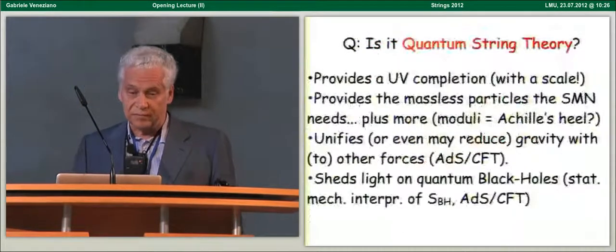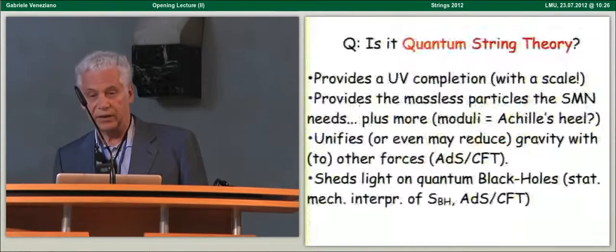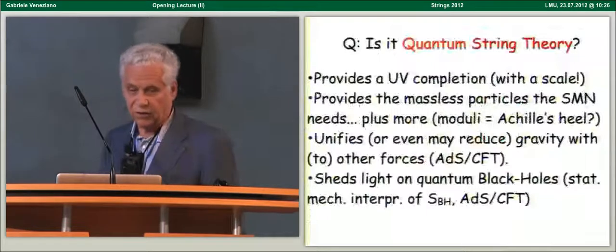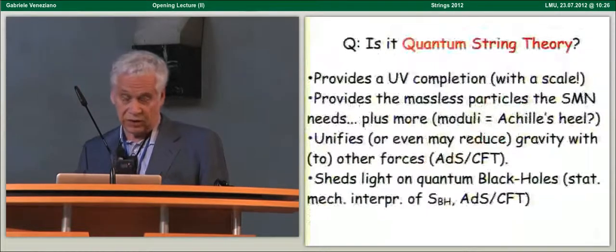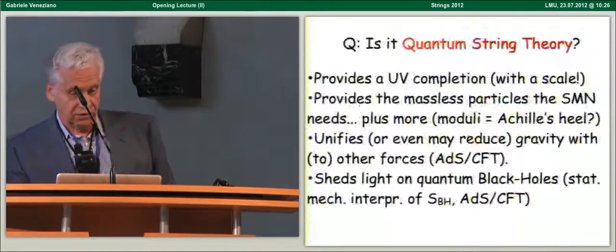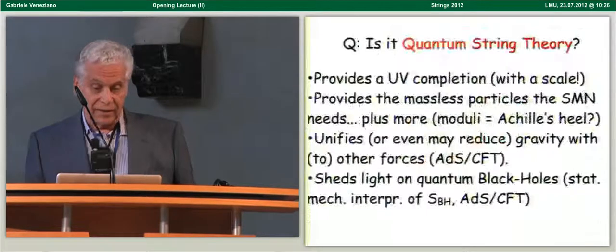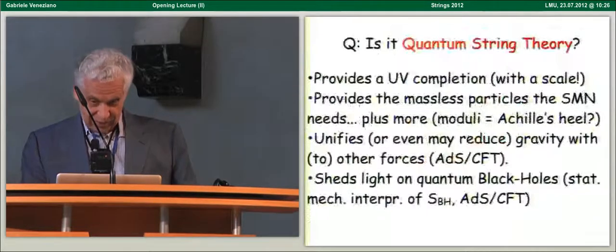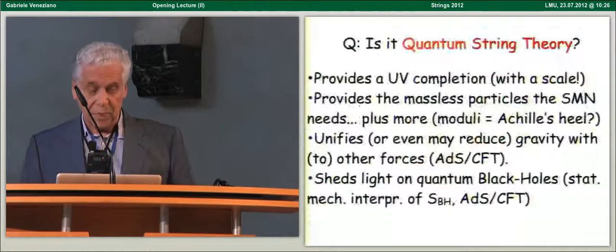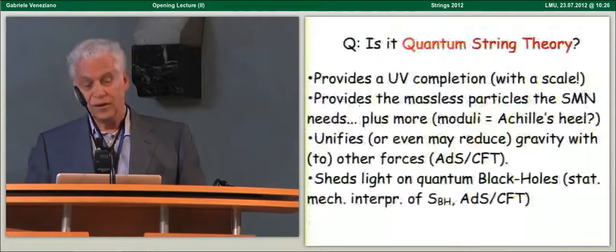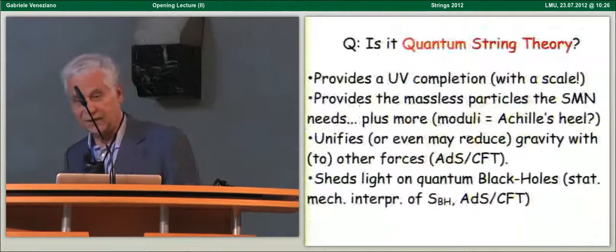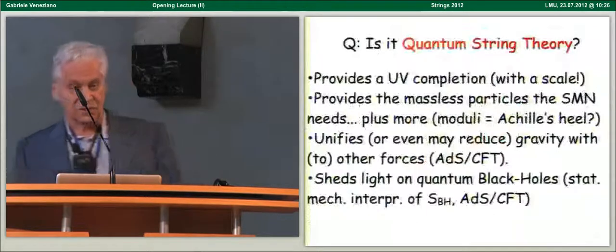And, of course, even more ambitious is whether this completion is provided by quantum string theory, which provides certainly a UV completion with a scale of its own, provides very nicely the massless particles that the standard model needs, the gauge bosons and the graviton, plus, unfortunately, more, a bunch of scalars, of moduli, which, in my opinion, are the Achilles heel of string theory.